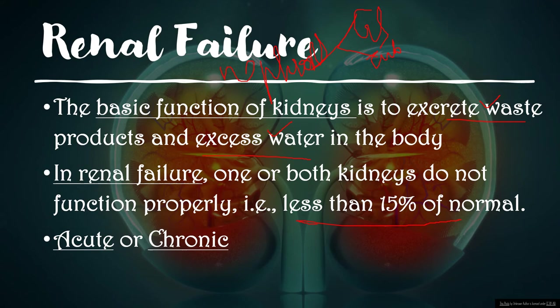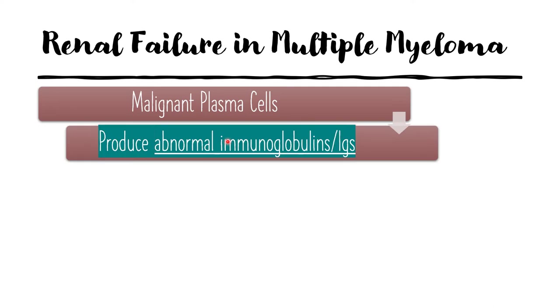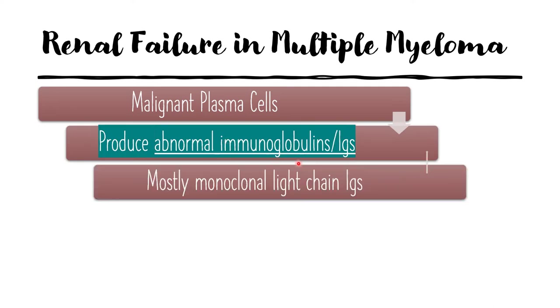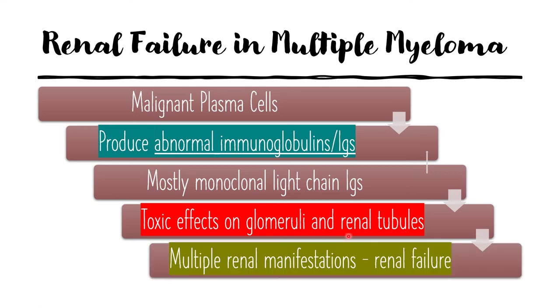This failure can be acute, which is a temporary failure that can be reversed, or chronic, which is long-term damage to the kidney. In multiple myeloma, the malignant plasma cells produce abnormal immunoglobulins, mostly in the form of monoclonal light chain immunoglobulins. These abnormal immunoglobulins exert toxic effects on the glomeruli and the tubules of the nephron, which in turn leads to multiple manifestations in the kidney that then cause renal failure.